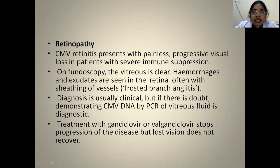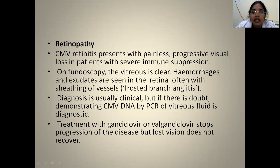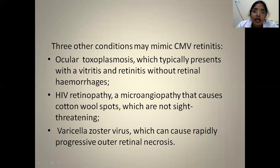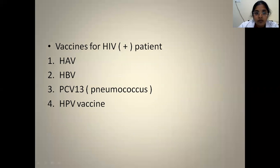Eye: an AIDS patient with CD4 count less than 50 presenting with progressive painless loss of vision — CMV retinitis is the first differential diagnosis. On fundoscopy, vitreous is clear but there will be hemorrhages, exudates, and often sheathing of vessels. Diagnosis is usually clinical; if doubt, vitreous fluid can be taken and CMV DNA by PCR demonstrated. Treatment for CMV retinitis is ganciclovir or valganciclovir. Mimics of CMV retinitis: ocular toxoplasmosis (no retinal hemorrhages), HIV retinopathy causing cotton wool spots, and varicella zoster infection causing progressive outer retinal necrosis. Vaccines given to HIV patients: hepatitis A, hepatitis B, pneumococcal, and HPV.